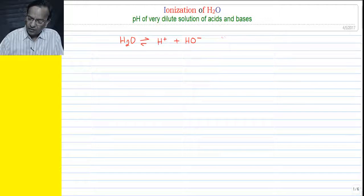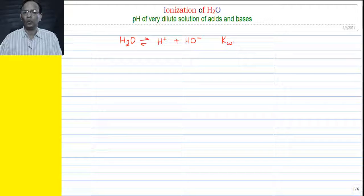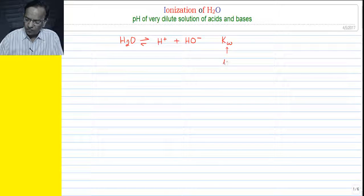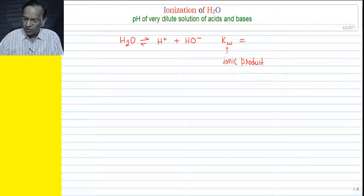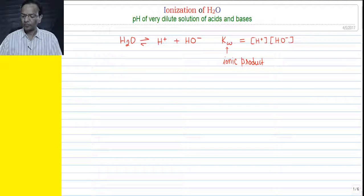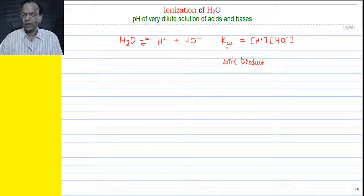For this ionization reaction, the equilibrium constant is denoted by Kw and read as the ionic product of water. It is nothing but Kc of this expression, which is the concentration of H⁺ multiplied by concentration of OH⁻. So the ionic product of water is a form of equilibrium constant expressed by Kw = [H⁺][OH⁻].